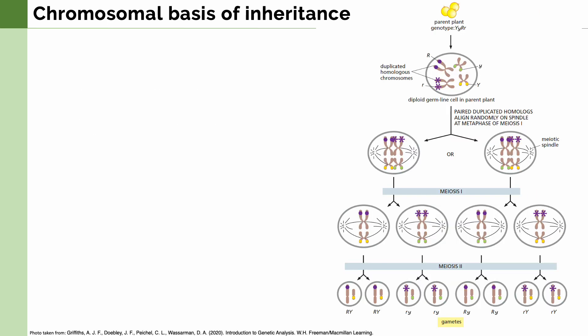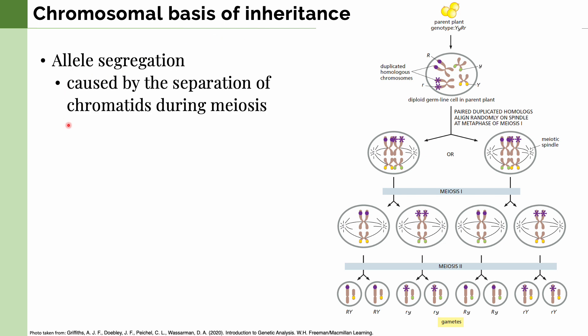Those were Mendel's three laws of inheritance. More recently, we have come to know the chromosomal basis of inheritance. Back then, Mendel had no knowledge of DNA and chromosomes, but now we do and can explain his laws. For allele segregation, this is caused by the separation of chromatids during meiosis. On this diagram, each allele is found on a separate arm of the chromosome, and as gametes are created, each gamete inherits one chromosome and the allele found on it.